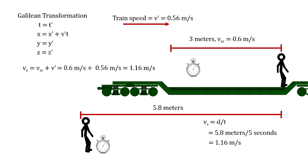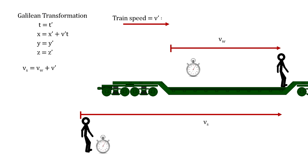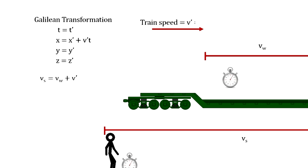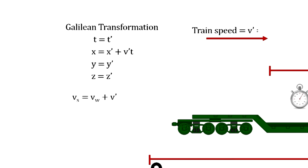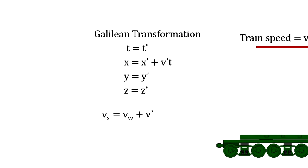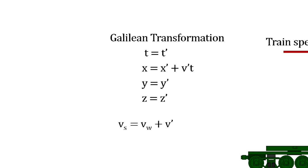This is the Galilean transformation between two reference frames moving at constant speed with respect to each other. These are called inertial frames, because they are not experiencing any acceleration. In this model, time flows at the same rate in all inertial reference frames, and all motion is relative. The Galilean transformations give us the equations for converting from one frame to another.